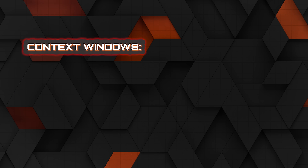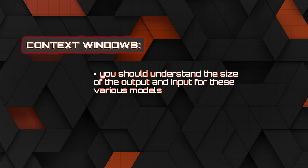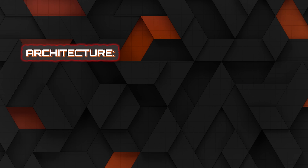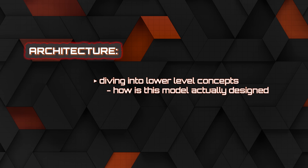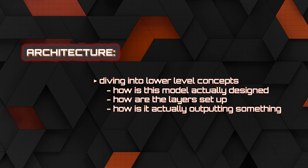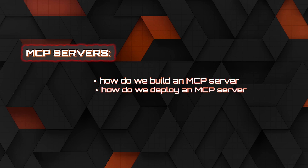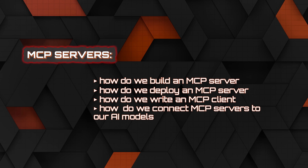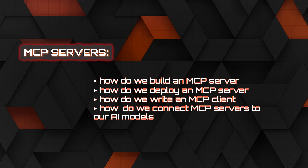Next is context windows — you should understand the size of the output and input for these various models, why you'd use a particular model, and the type of data it can accept or output. Then there's architecture, which gets more complex: how is the model actually designed, how are the layers set up, how is it actually outputting something? And then there are MCP servers — how do you build an MCP server, deploy one, write an MCP client, and connect MCP servers to your AI models? You should understand everything about them because it's really the next wave of AI that a ton of companies are pushing out right now.